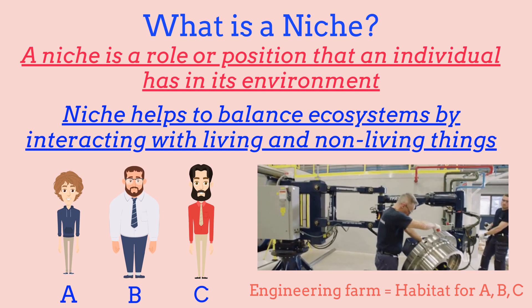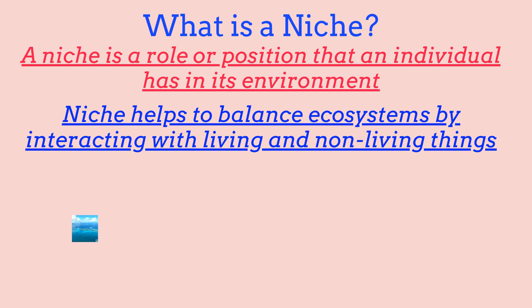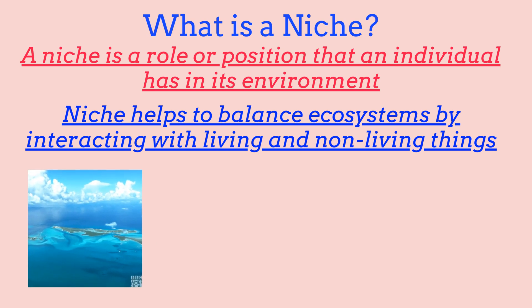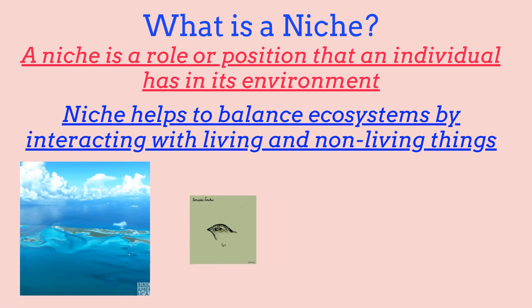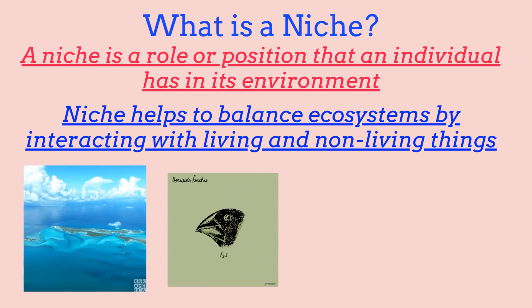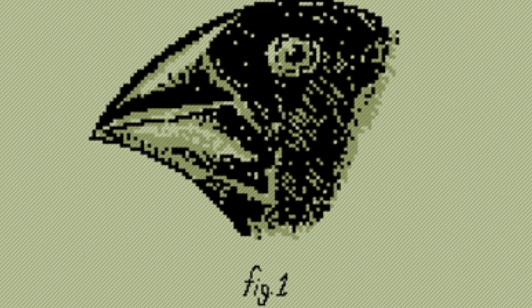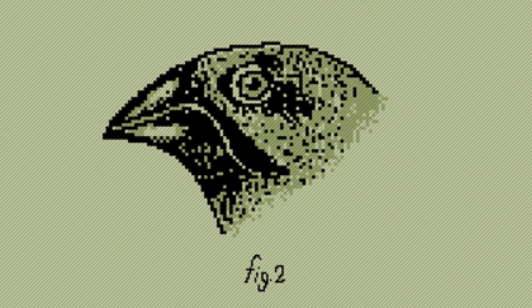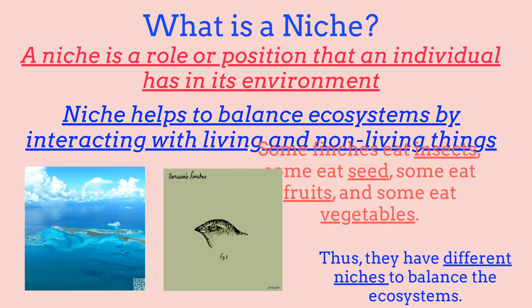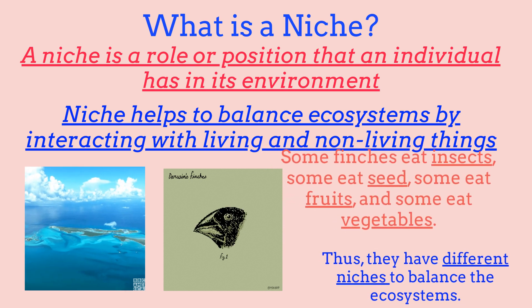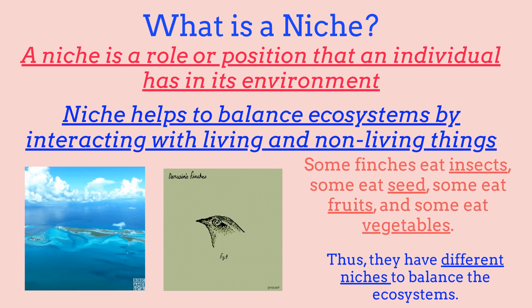Here's a real example of what a niche is. Imagine an island where four types of finches live. They all look the same and share the same habitat, but they all have different niches. One finch eats insects, some eat seeds, some eat fruits, and others eat vegetables. Thus, they have different niches to balance the ecosystem, and these different niches allow them to find food and survive.